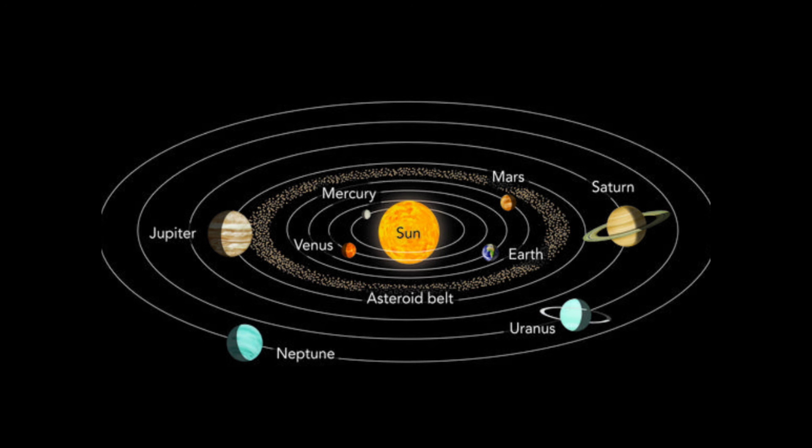Besides the planets, the solar system also includes various other heavenly bodies. As well as planets, there are various other types of heavenly bodies present around the sun.